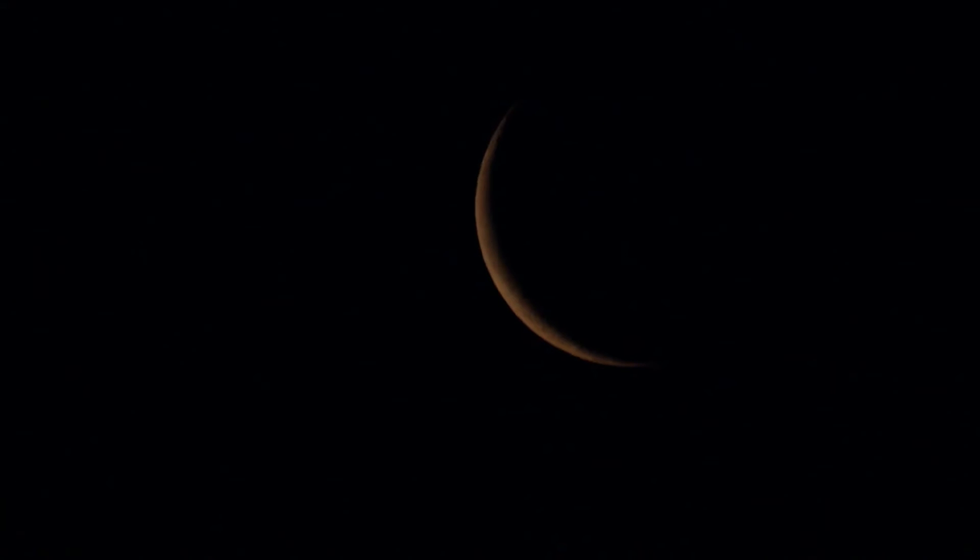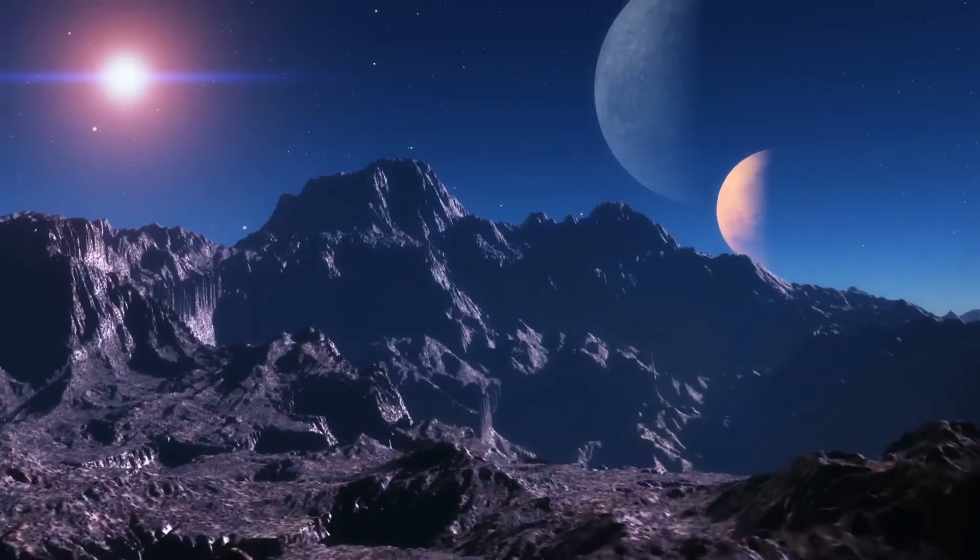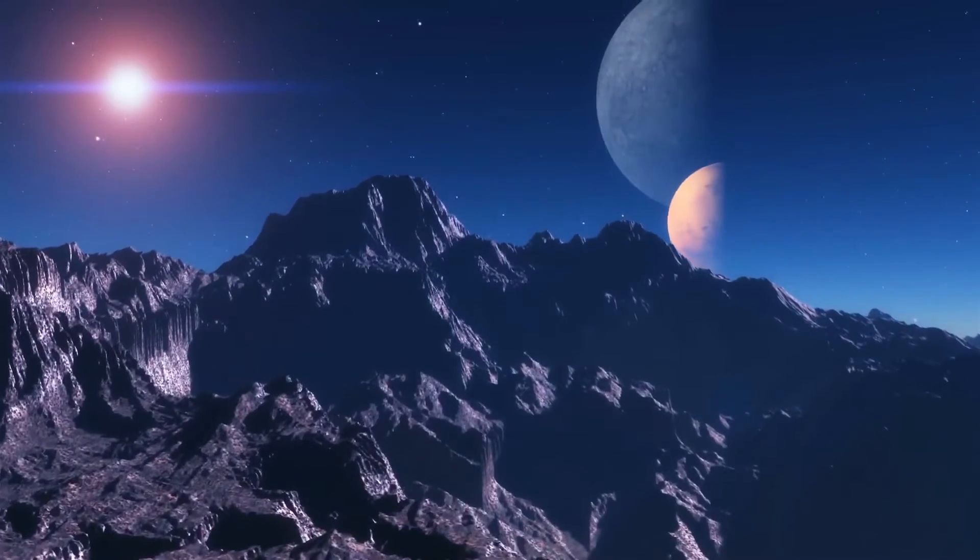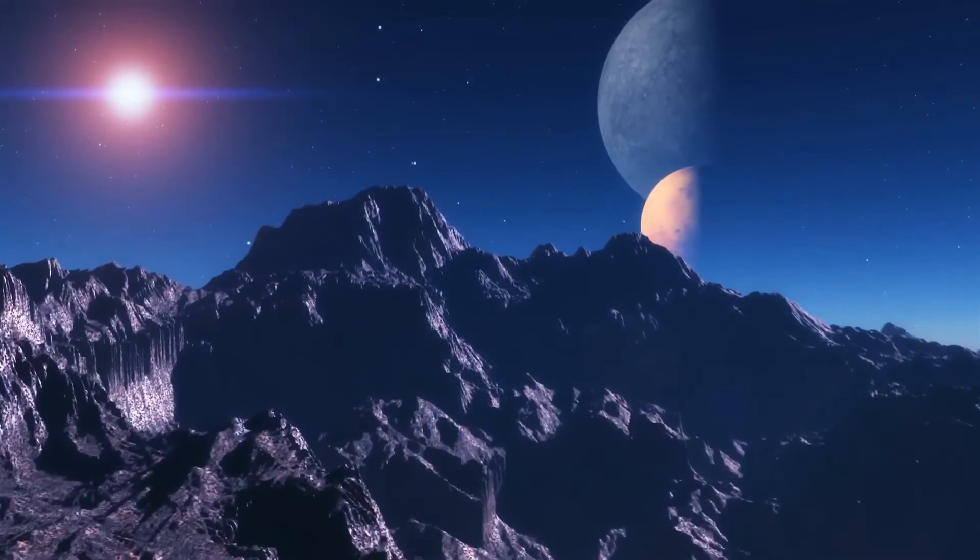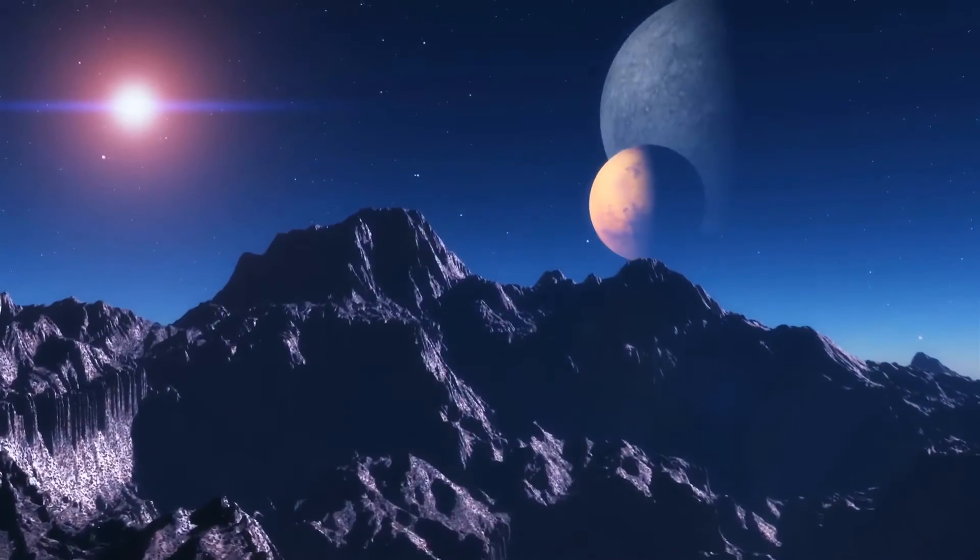The second planet, very recently discovered, is called PDS-70 c. This planet sits on the outer edge of the star system, roughly 3.3 billion miles away from the star, and its mass is between 1 to 10 times the mass of Jupiter.